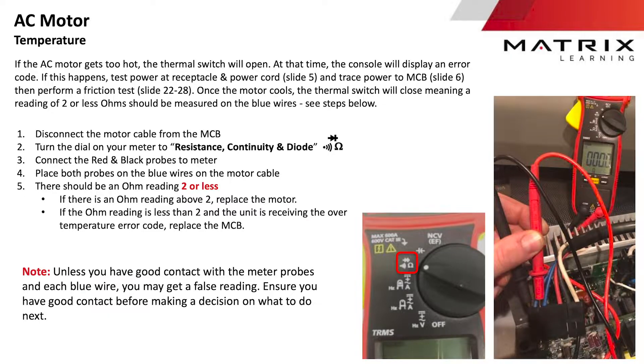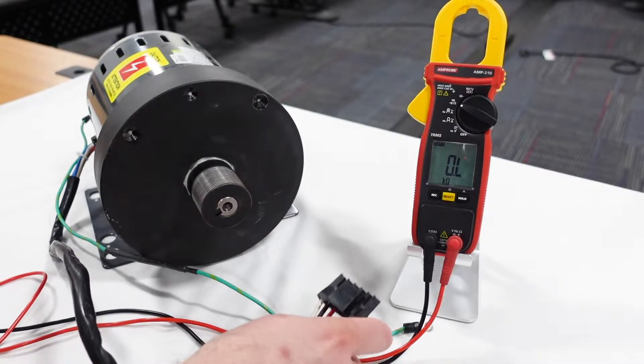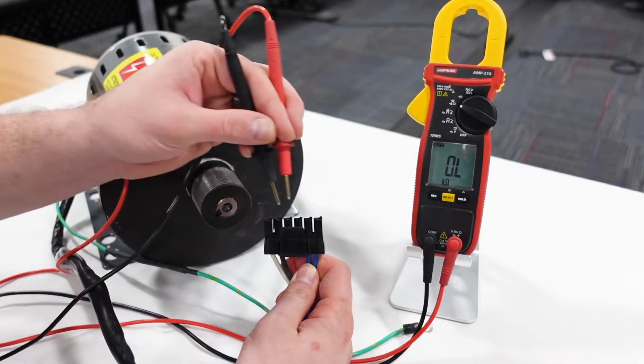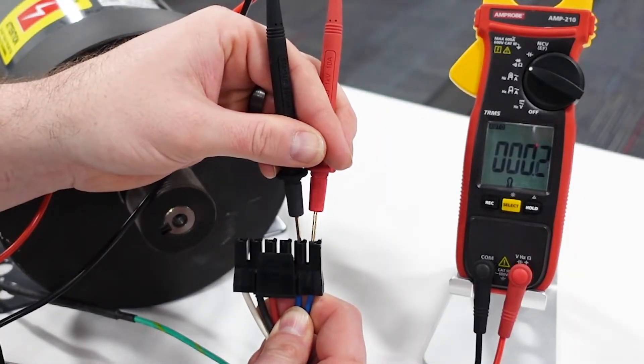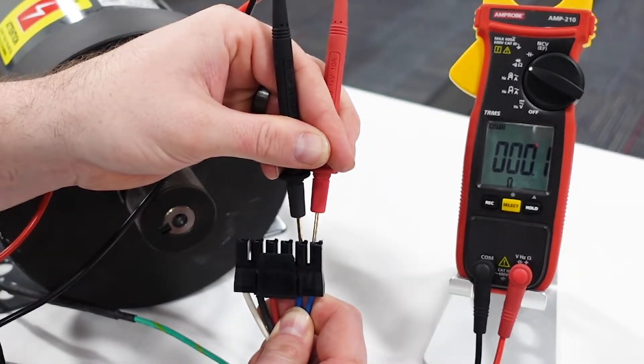A thermal switch on the AC motor can also be tested, but remember, the motor has to cool off before the test. Place both probes on the blue wires on the motor cable. The value should be 0.2 ohms or less.